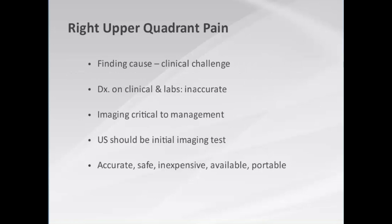When patients present to the emergency department with right upper quadrant pain, finding the cause is a clinical challenge. If you base your diagnosis solely on clinical evaluation and a few simple laboratory tests, you will be inaccurate a large number of times. Imaging is critical to management, and ultrasound should always be the initial imaging investigation — it's accurate, safe, inexpensive, available, and today highly portable.